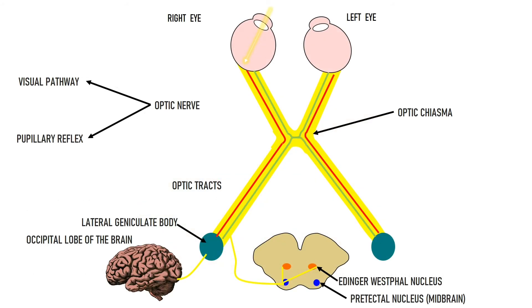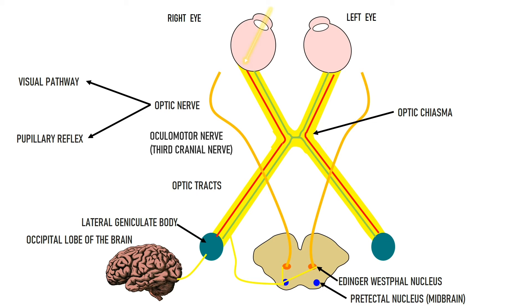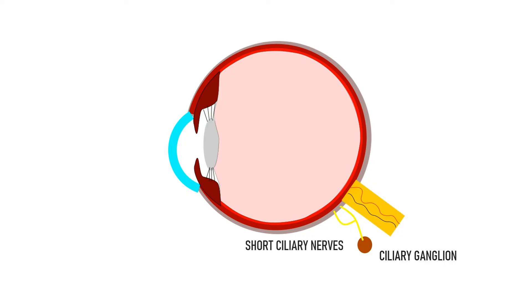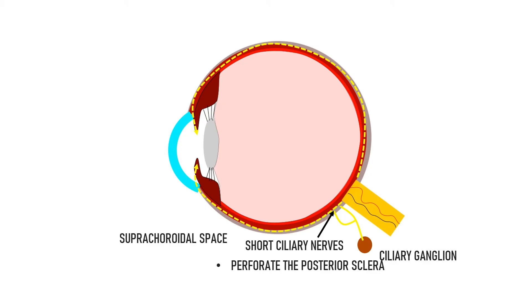Pre-ganglionic parasympathetic fibers arise from the Edinger-Westphal nucleus and are carried by the oculomotor nerve. At about the level of the superior orbital fissure, the oculomotor nerve divides into a superior division and an inferior division. The parasympathetic fibers travel in the inferior division to reach the ciliary ganglion, located about 1.5 to 2 cm behind the eyeball embedded in surrounding fat, where they synapse. Post-ganglionic fibers then travel via the short ciliary nerves, which perforate the posterior sclera and continue in the supra-choroidal space, ultimately reaching the sphincter pupillae muscle to cause pupillary constriction.